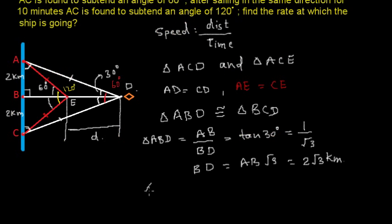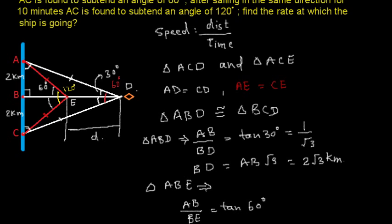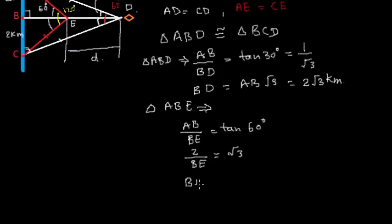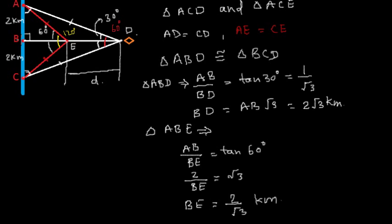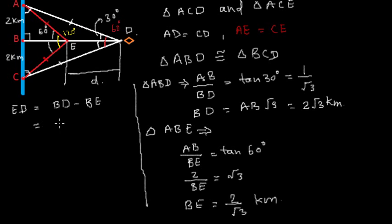Similarly, in triangle ABE, AB divided by BE equals tan 60 degrees. AB is 2 and tan 60 equals root 3, so BE equals 2 by root 3 kilometers. We have now found BD and BE, so we can find ED — the distance travelled by the vessel in 10 minutes — as ED equals BD minus BE, which is 2 root 3 minus 2 by root 3.